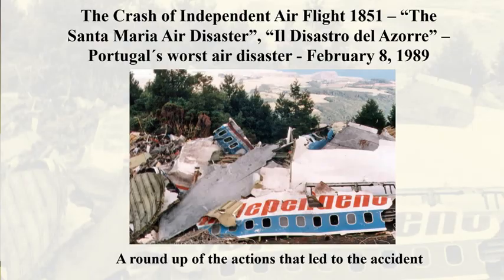Hello everyone, my name is Francisco Cunha. I'm the author of the book on the crash of Independent Air Flight 1851, which was the deadliest air disaster to occur in Portugal and took place on February 8th, 1989. I made this small presentation to try to explain in a simple and straightforward way the reasons that led to the accident. It is my first ever attempt at this kind of work and I hope you find it informative enough.